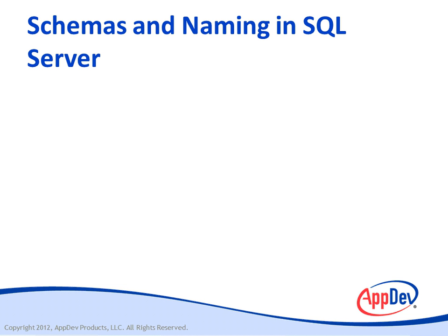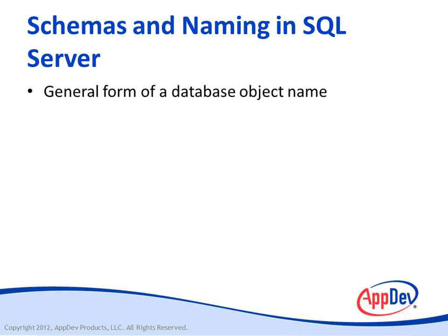Whenever you execute a data selection query in SQL Server, you'll be accessing one or more database objects, so it's important that you understand how things are named. In SQL Server, database object names use a convention that contains four parts, any of which can be blank except for the object name. The server name specifies a linked server name or remote server name — a blank implies the current server. The database name specifies the database — a blank implies the current database context. The schema name specifies the schema containing the object — a blank implies the default schema for the current user, or the DBO schema if no other default schema is assigned. The recommendation is to use the schema name with the object name.